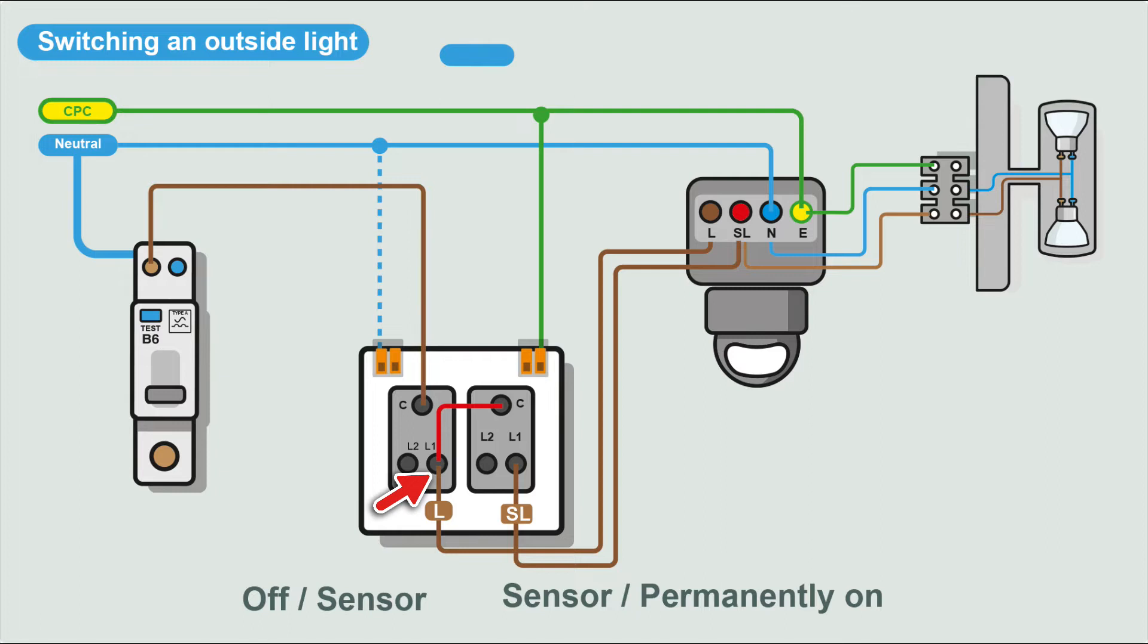And you'll have your sensor function. And as you can see, when the first switch is on, we're taking the feed onto the common on the second switch. And when we switch the second switch on, that'll take a feed to the switch live in the PIR, and you can have the light permanently on. So in this setup, you can have everything off, you can have it on a sensor so it automatically detects, or you can have it permanently on. So you've got good functionality there.